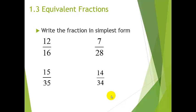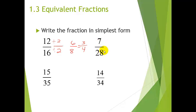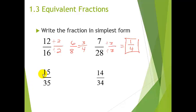Here are some practice problems. For 7/28 — you need to know your multiplication facts here. Since 7 is a factor of 28, I'll use a copycat of 7 over 7, which is the magic one. 7 divided by 7 is 1, and 28 divided by 7 is 4. So the simplest form is 1/4.